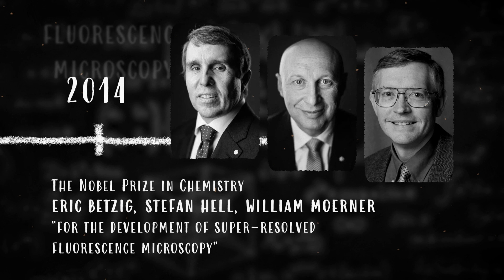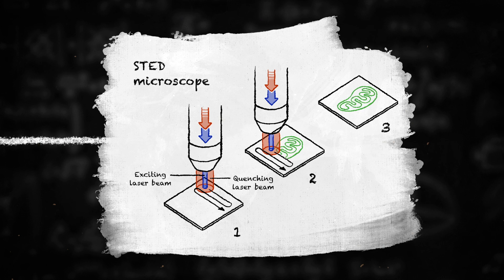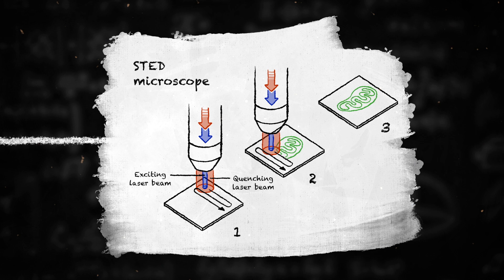Betzig and Moerner revolutionized microscopy by steering fluorescence in individual molecules using light, surpassing the wavelength limit and enabling high-resolution imaging of living cells.